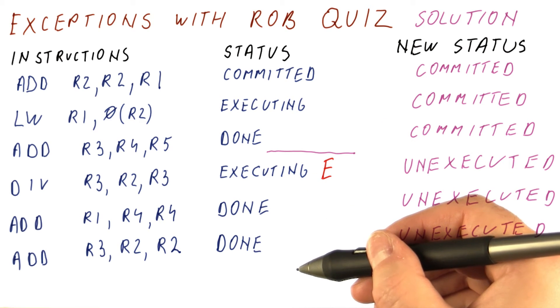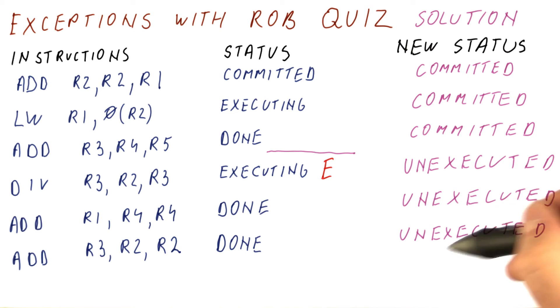Flush everything that follows the divide from the pipeline. So these instructions now become unexecuted, meaning we haven't even fetched them as far as the programmer is concerned.